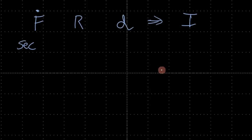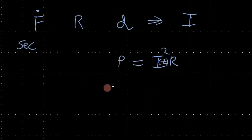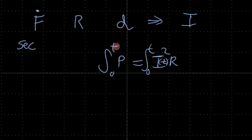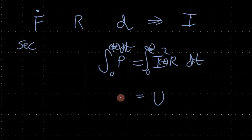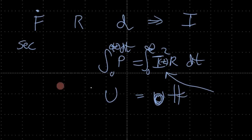If we integrate I squared R over time from zero to T — where T can be infinity — we will come out with an energy term. The trick is figuring out what the current I is as a function of time, since the charge rate is changing, the charge on the piezo is changing, and thus the current over the resistor is also changing. We'll go ahead and do that in the next part of the lecture.